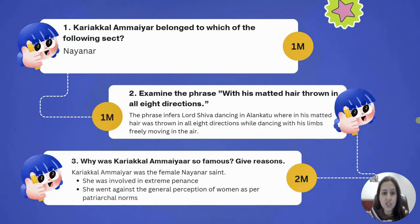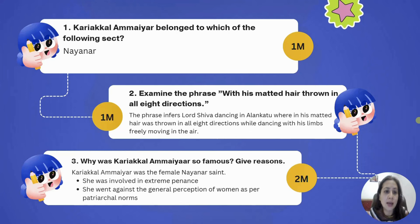In this chapter on Bhakti and Sufi traditions, there are mainly 3 women Bhakti saints mentioned: Karayikal Amayar, who was a Nainar; Andal, who was an Alwar; and third is Mirabai. Mirabai was a Rajput princess and a follower of Lord Krishna.